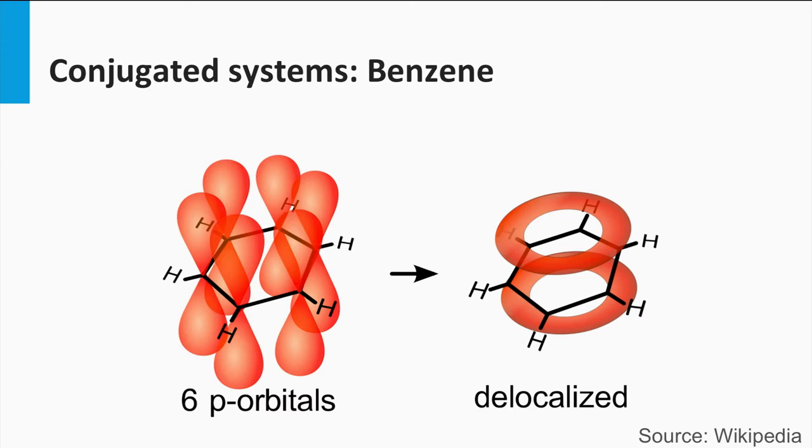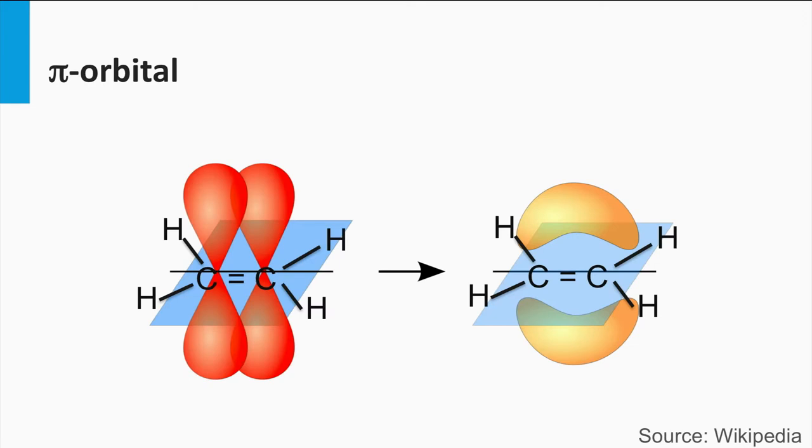A methane molecule, which is tetrahedrally coordinated, has four equivalent sp3 hybrid bonds with a bond angle of 109 degrees, as we discussed in week 2. Here we see an ethane molecule, which has three equivalent sp2 hybrid bonds with a bond angle of 120 degrees plus an electron in a pz orbital. Two neighboring pz orbitals form a so-called pi orbital.